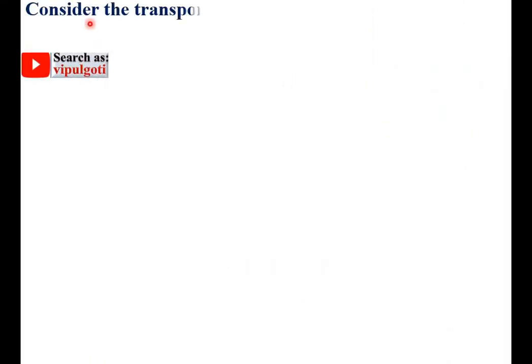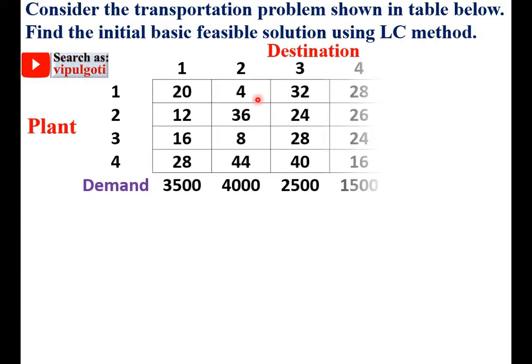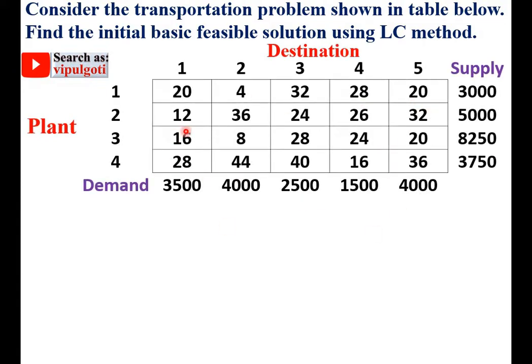Let's take an example. Consider the transportation problem shown in the table below. Find the initial basic feasible solution using the LC method. Our objective is to find only the initial basic feasible solution by LC method. There are basically three different IBFS methods, but here it is mentioned that you have to follow the LC method only.